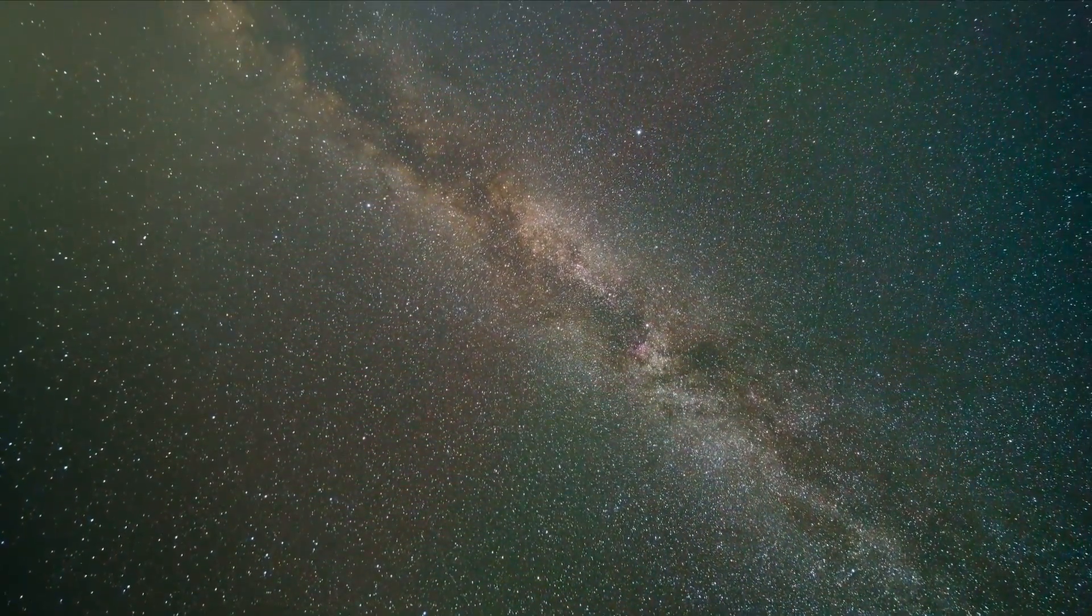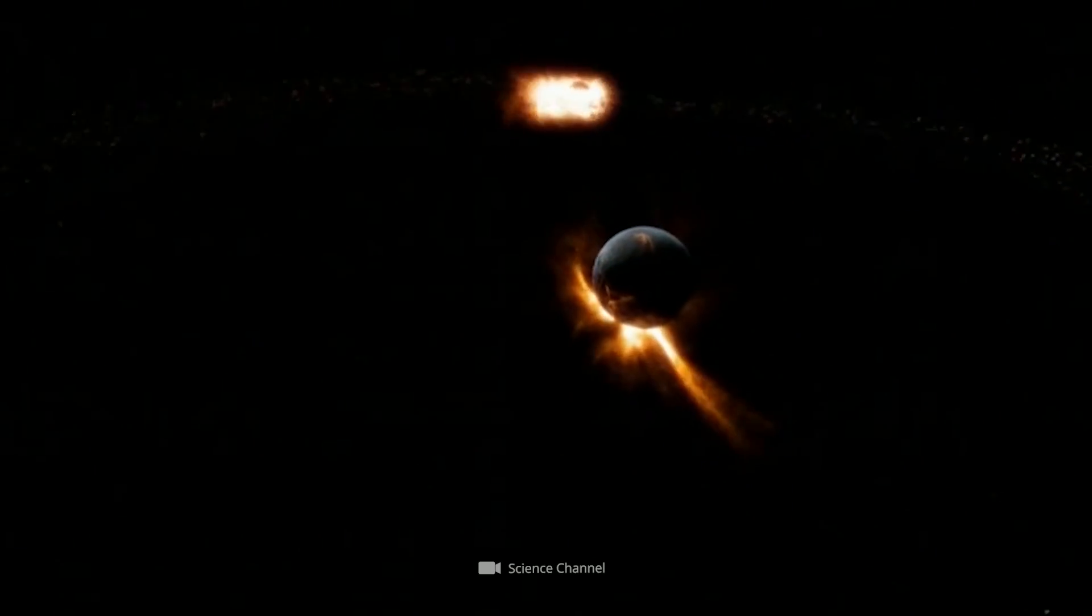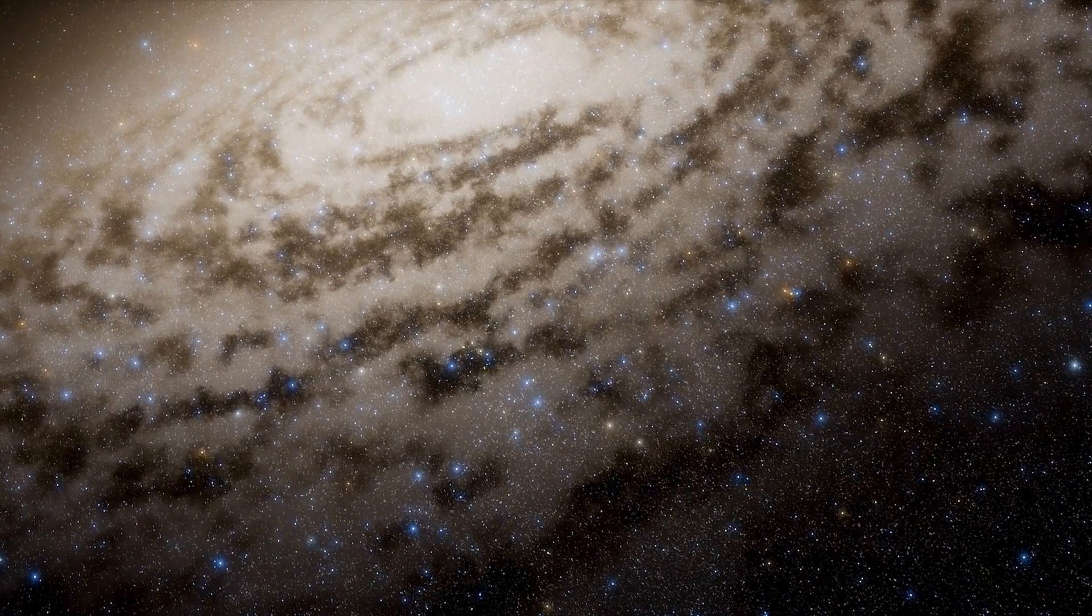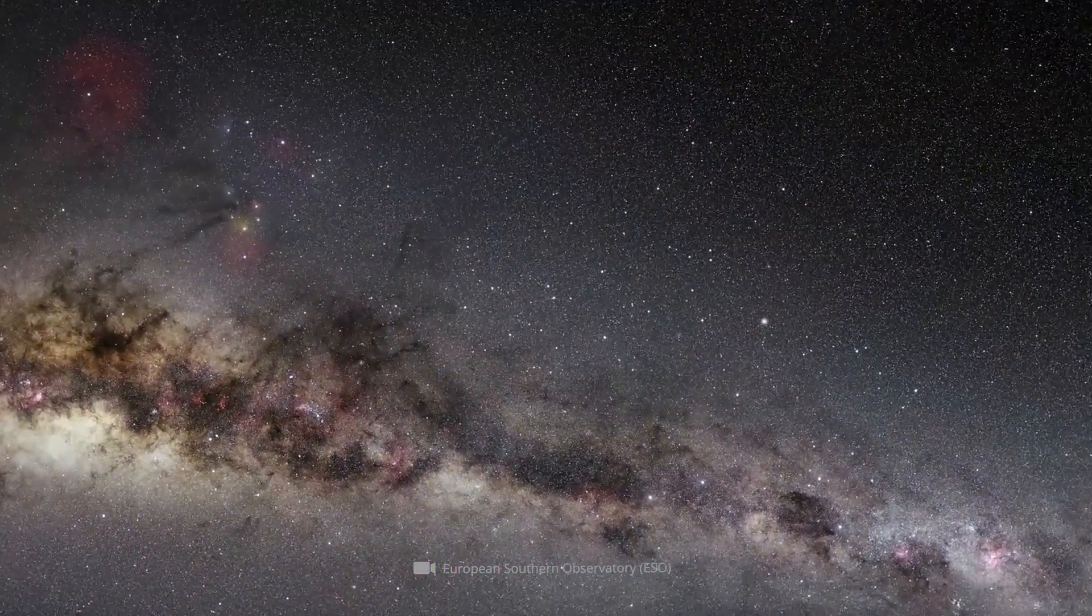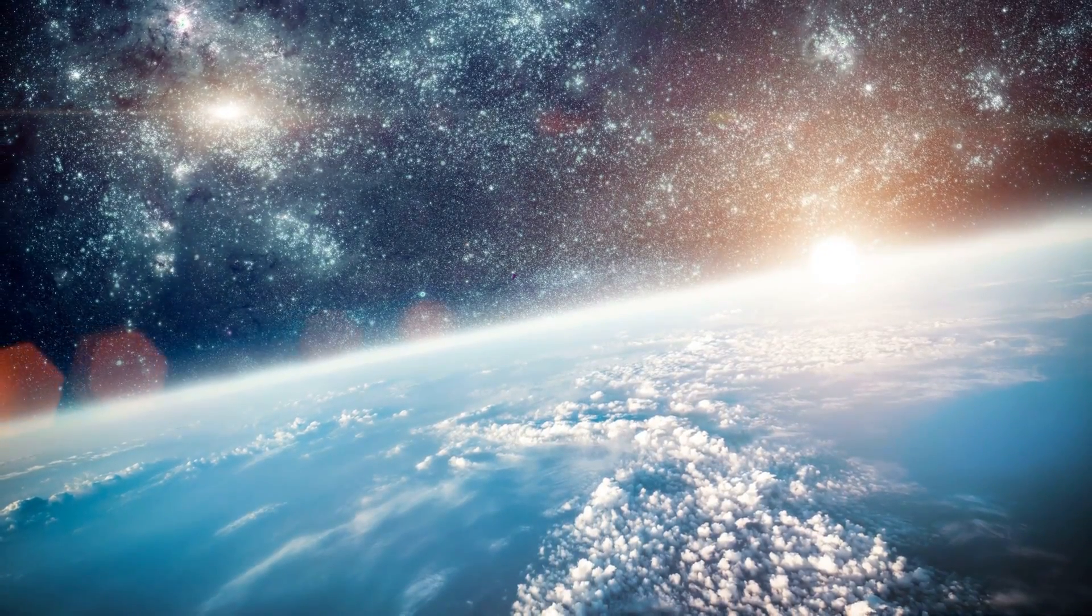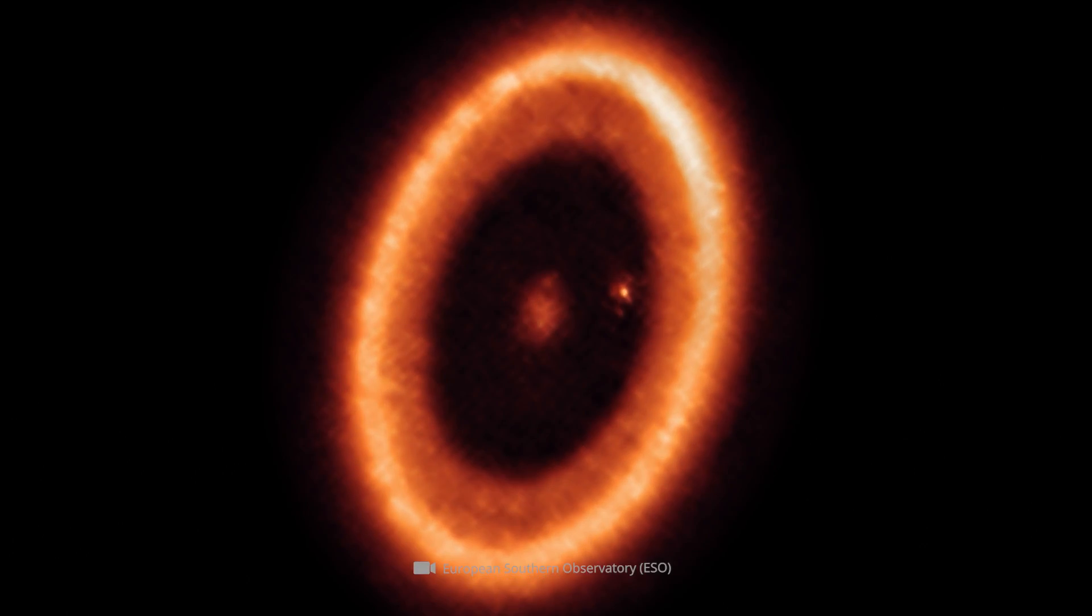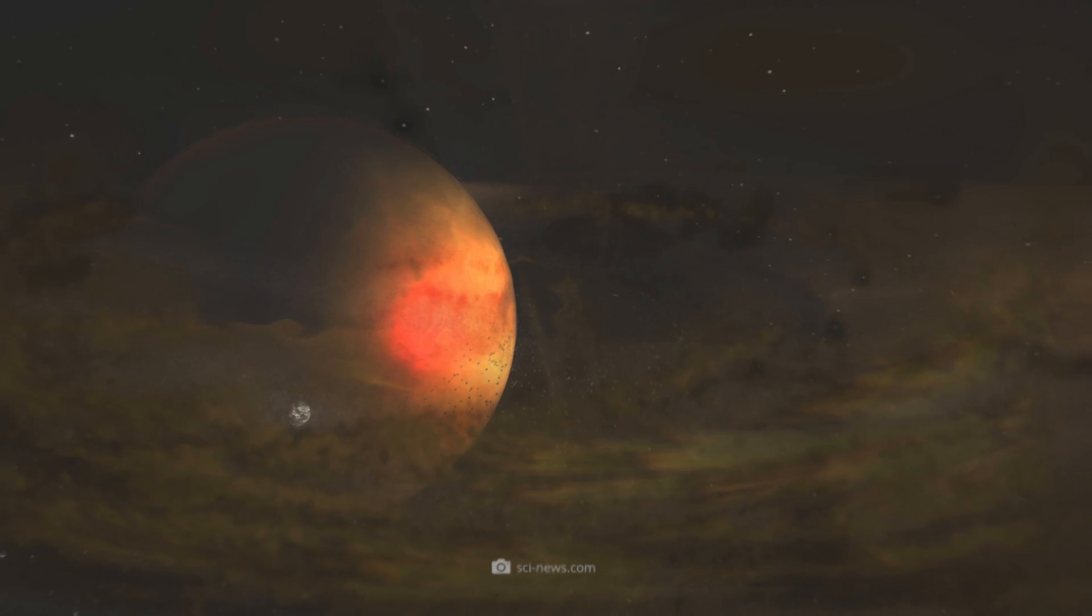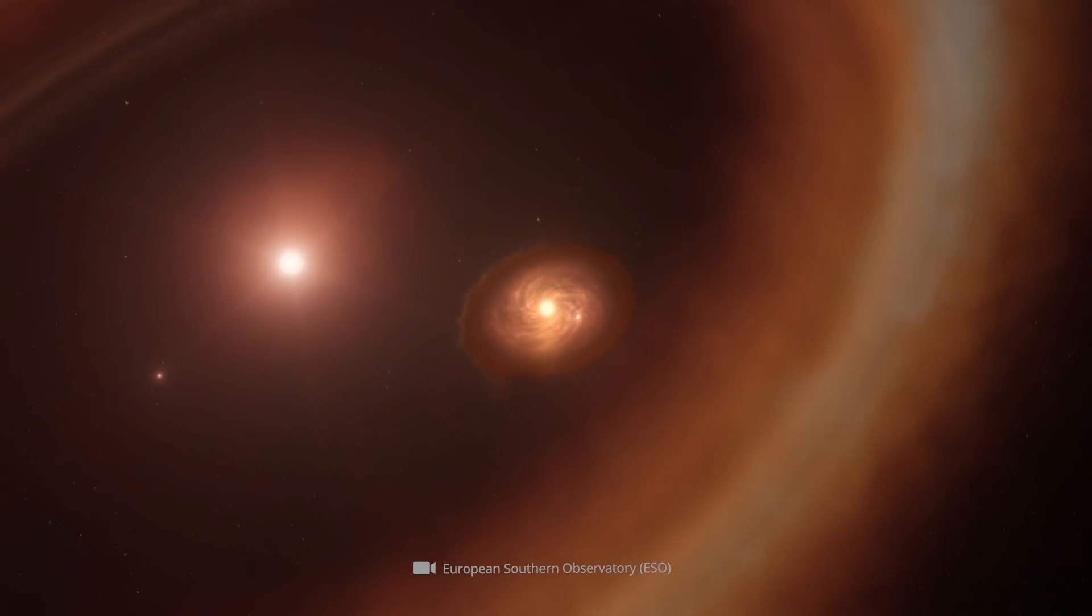In fact, scientists could soon be granted the opportunity to directly observe the formation of moons around a distant exoplanet for the first time. The galactic object of desire, which moved into the center of scientific attention, is approximately 370 light-years away from our blue homeland planet and bears the name PDS-70C. It's a Jupiter-like exoplanet in the constellation Centaur, which orbits a very young 5.4 million-year-old star.